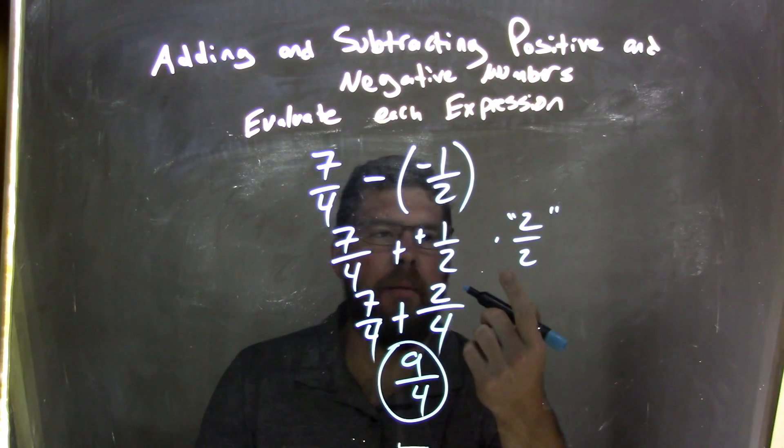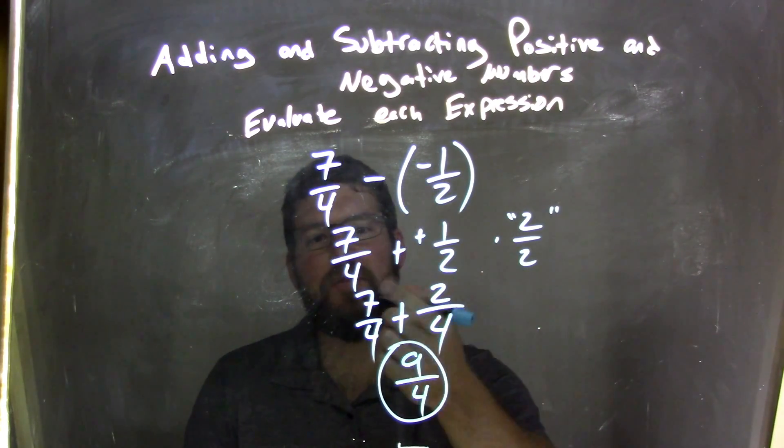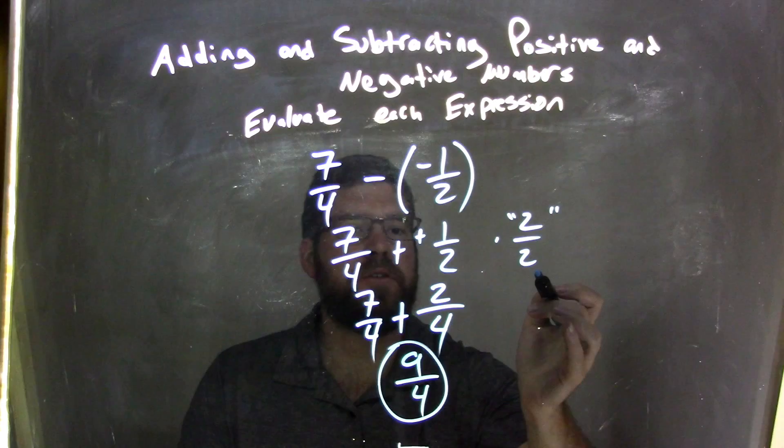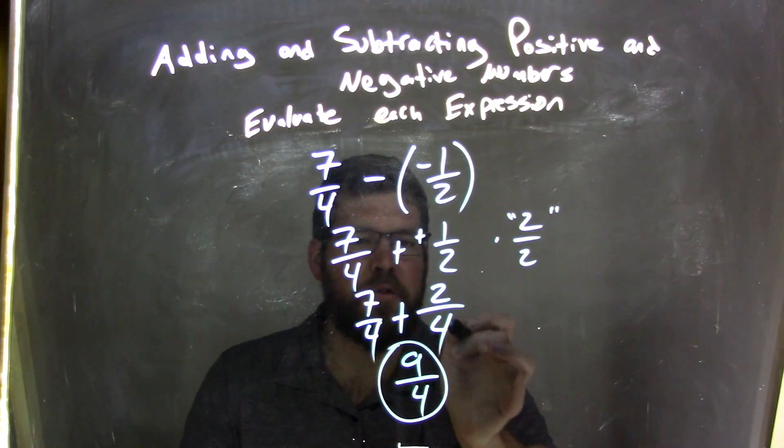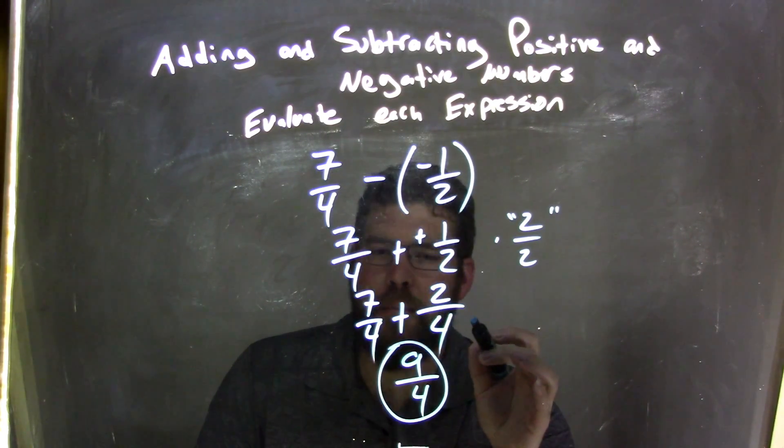Multiply that to find a common denominator, 1 half times 2 over 2, because 2 goes into 4 two times. So 2 over 2. 2 times 1 is 2, and 2 times 2 is 4, so 2 fourths is my fraction, which is the same as 1 half, just looks different.